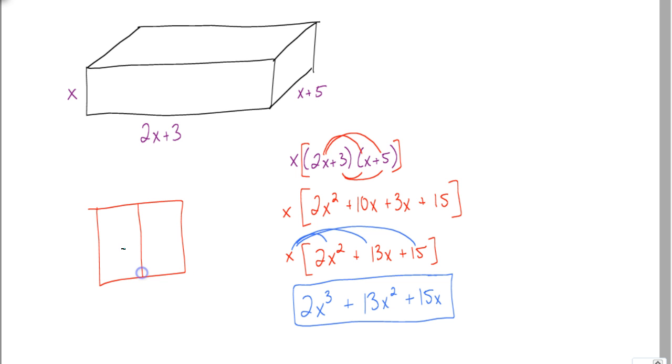Or, a window method. Where we create what looks like a window or a box. And, we have 2 items multiplying by 2 items. So, we're going to make a 2 by 2 grid. Outside of this grid, we're going to put the 2x plus 3 and x plus 5 in any order. It doesn't matter if you have the 2x plus 3 on the top. Or, if you have the 2x plus 3 on the side.